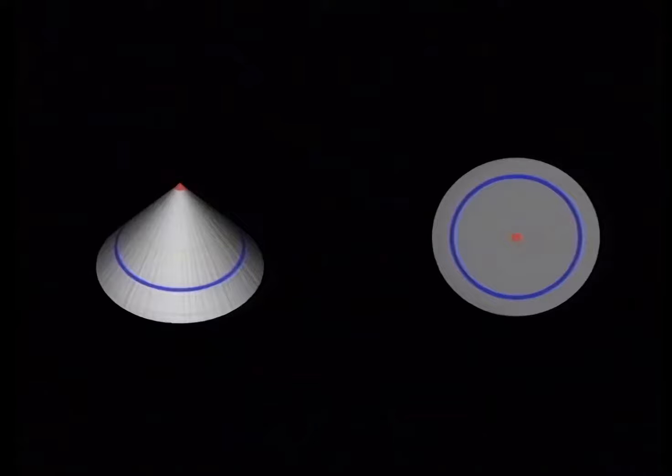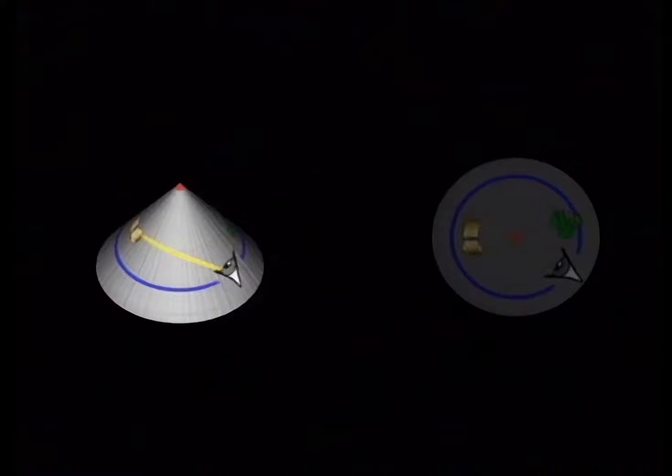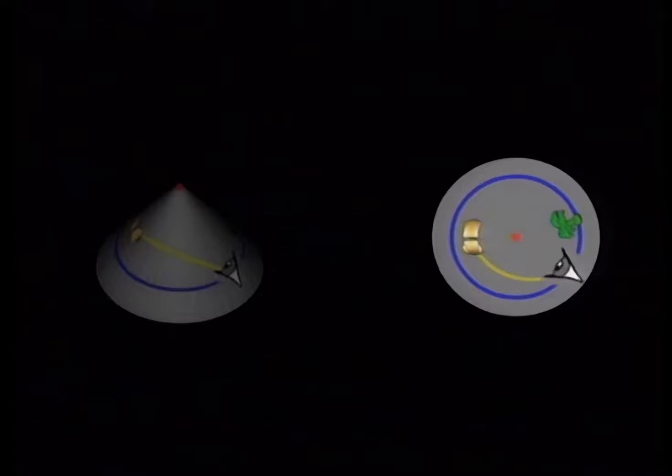We introduce an observer who lives inside the cone surface and a few objects for him to observe. To the insider, light rays travel in straight lines, but the outsider sees those lines as curving around the cone point.